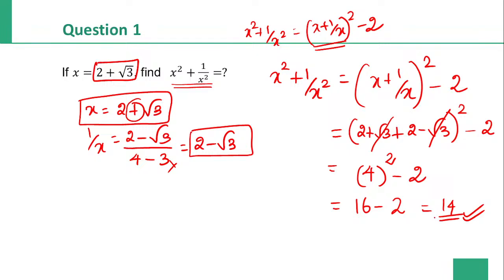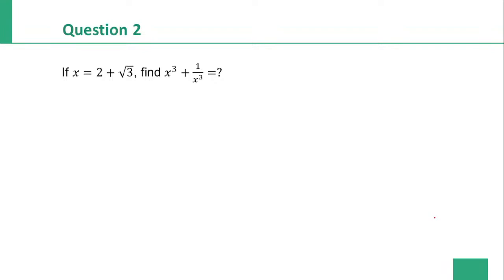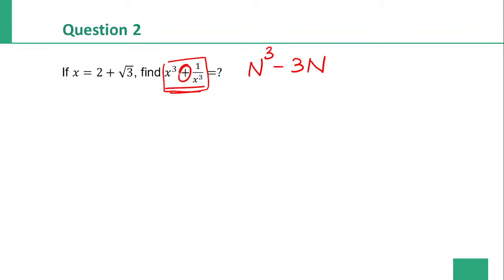Next, question number 2. x is equal to 2 plus root 3. Find x cube plus 1 by x cube. The shortcut for x cube plus 1 by x cube uses n cube minus 3n.